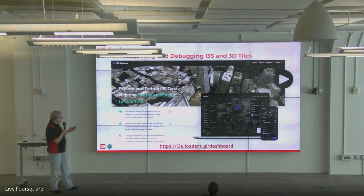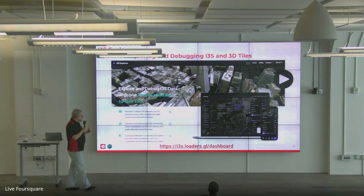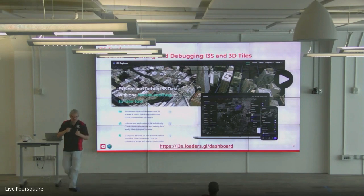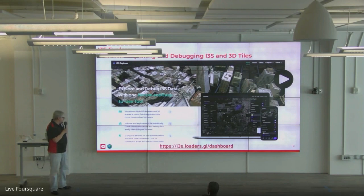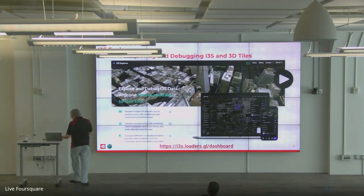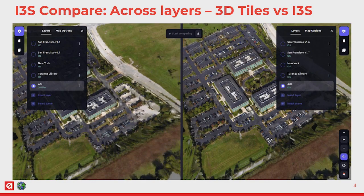You can get all the debug data. You can see if there are some mistakes in the data. It's a pretty useful tool to really fix your data and find some issues. The comparison feature — the cross-layer, 3D tiles versus i3s — gives you a screen divided in two parts. You can have i3s or 3D tiles loaded on one side and the other dataset loaded on the other side.